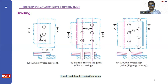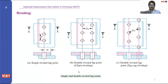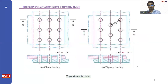In the third case, you can see the zigzag type of riveting. Depending upon the size difference of the plate in the smaller section, three rivets are incorporated, and in the larger section more rivets are incorporated — this is called zigzag. So we have seen a single riveted joint, a chain riveted joint, and a zigzag type of riveted joint.